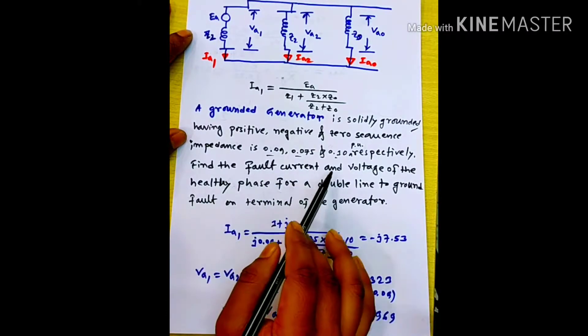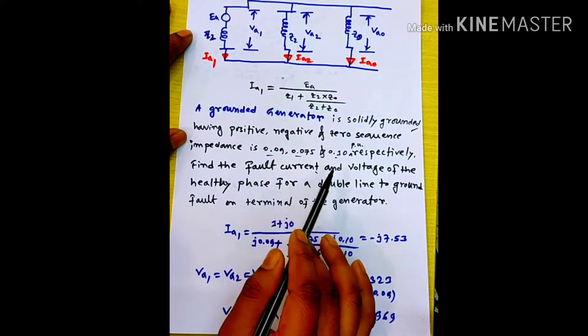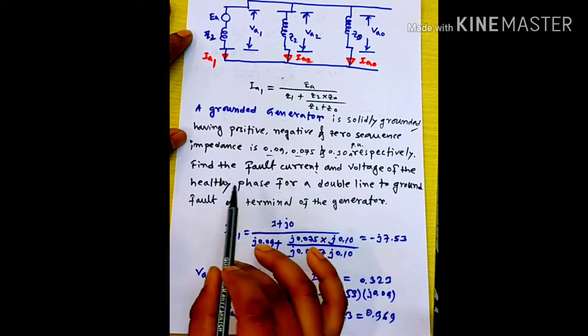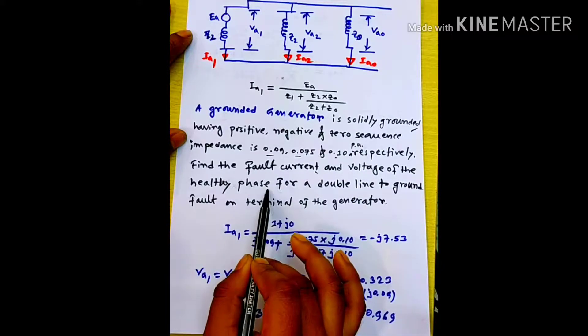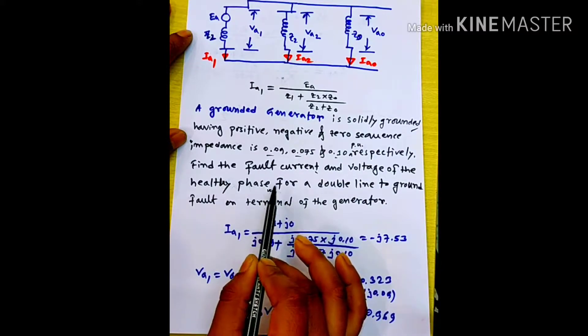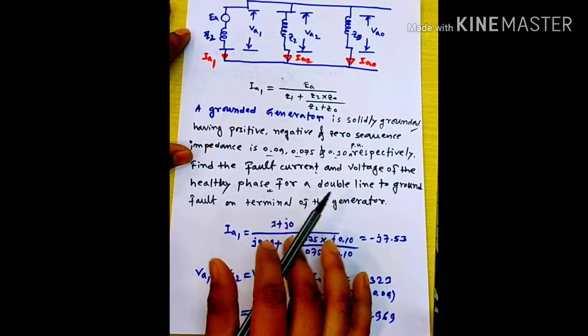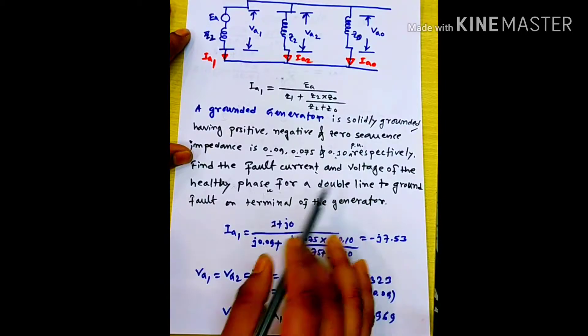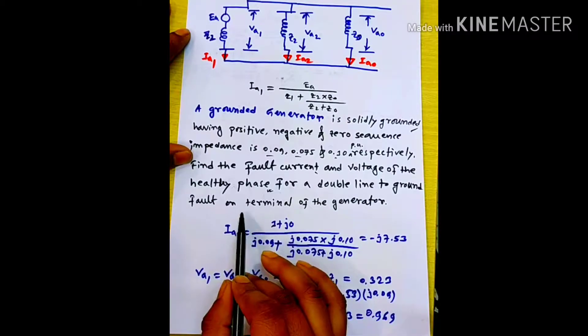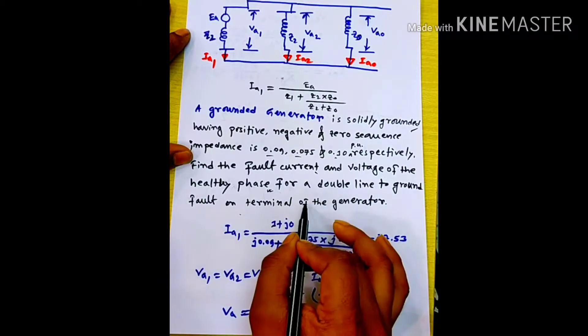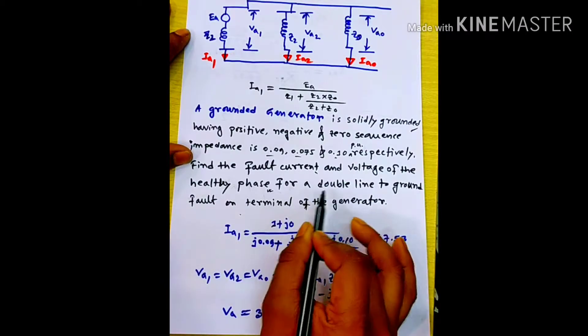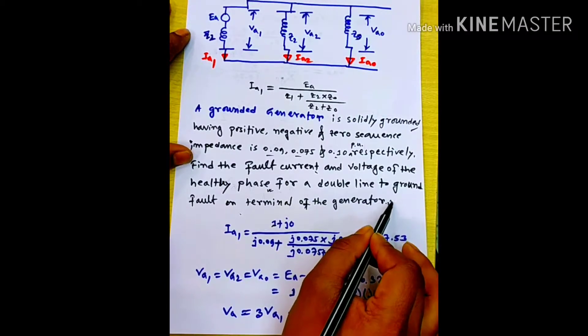Find the fault current and the voltage of the healthy phase for a double line-to-ground fault on the terminal of the generator. This is a double line-to-ground fault.